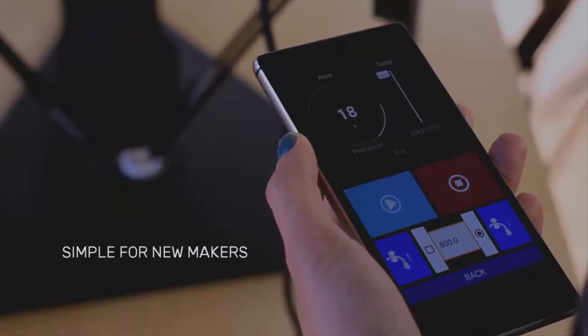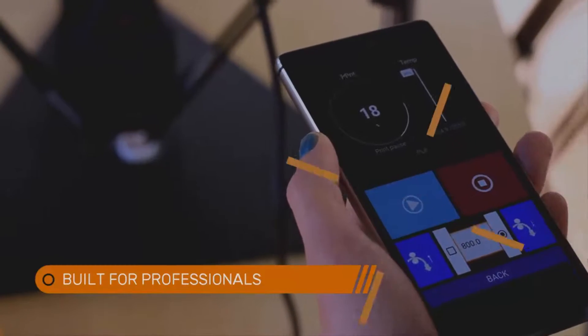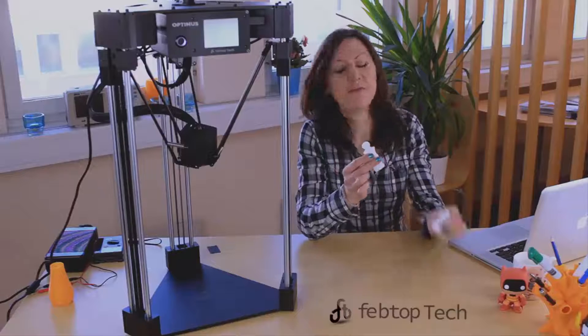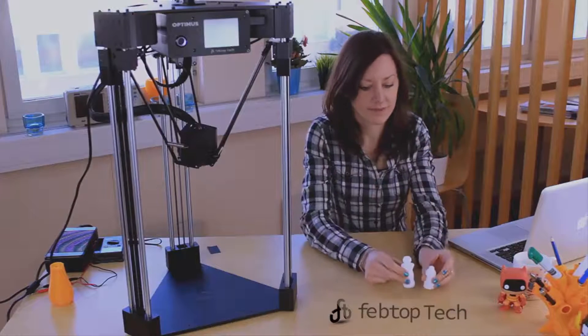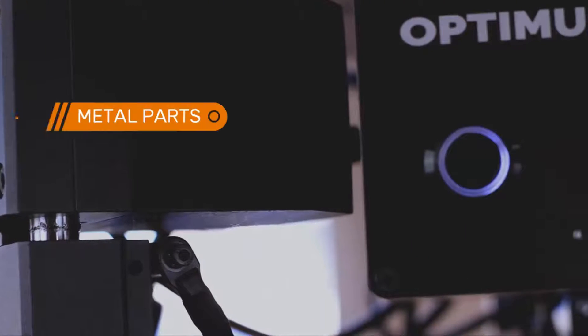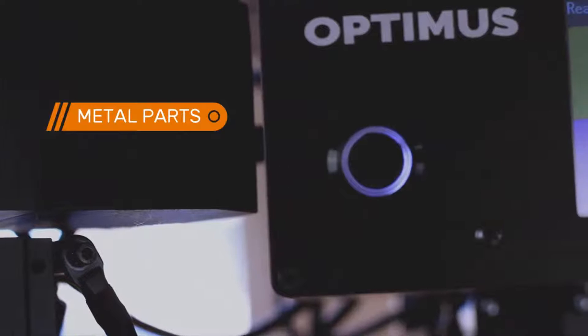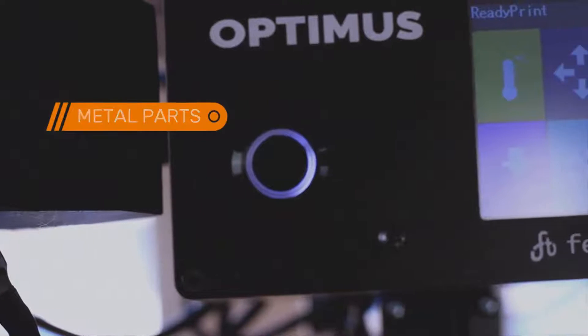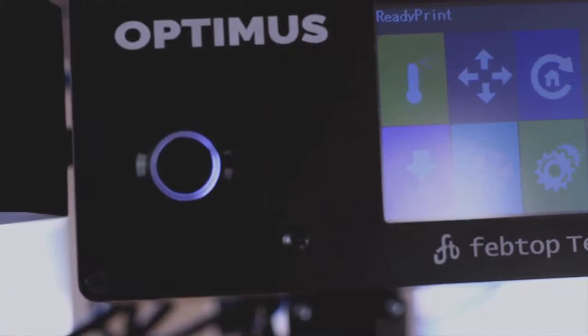And while it's easy to use, this machine was built for professionals who require top-grade tools. This is what we're all about. And with quality in mind, we built the Optimus with all metal parts. This ensures that it's going to be reliable, sturdy, and that it can bring your ideas to life year after year.